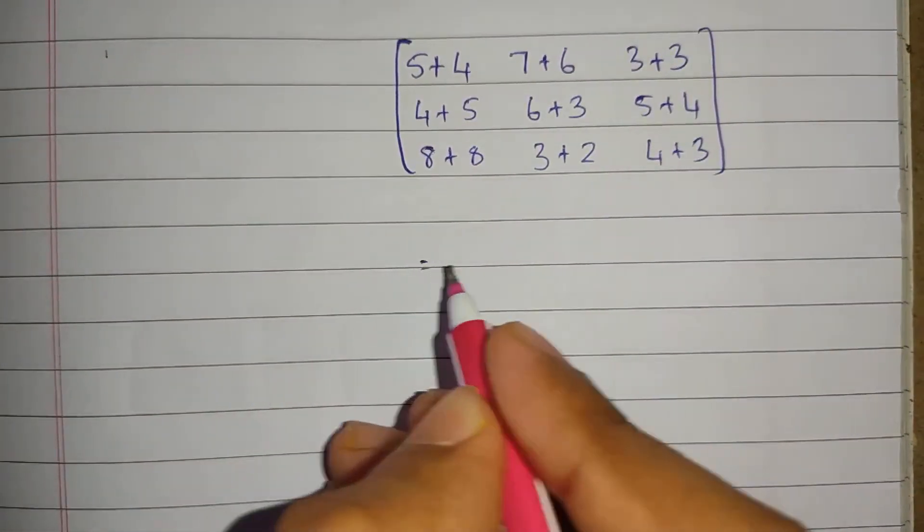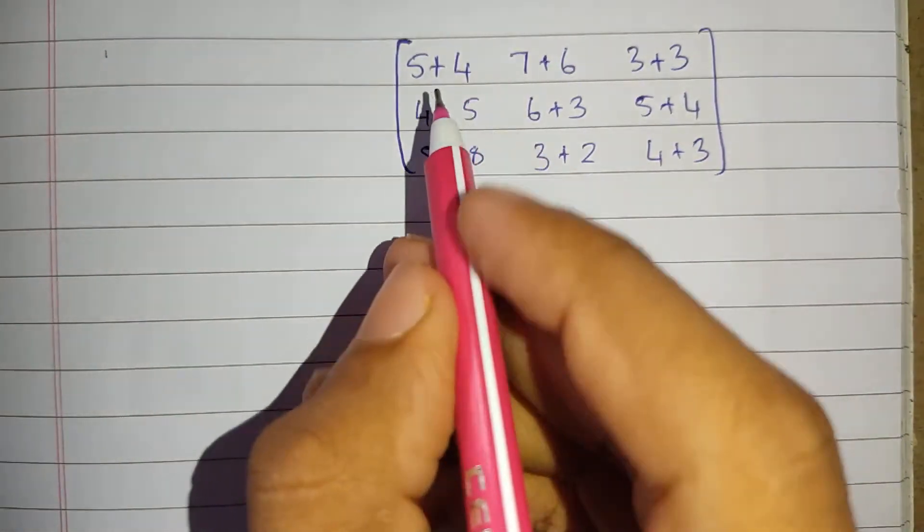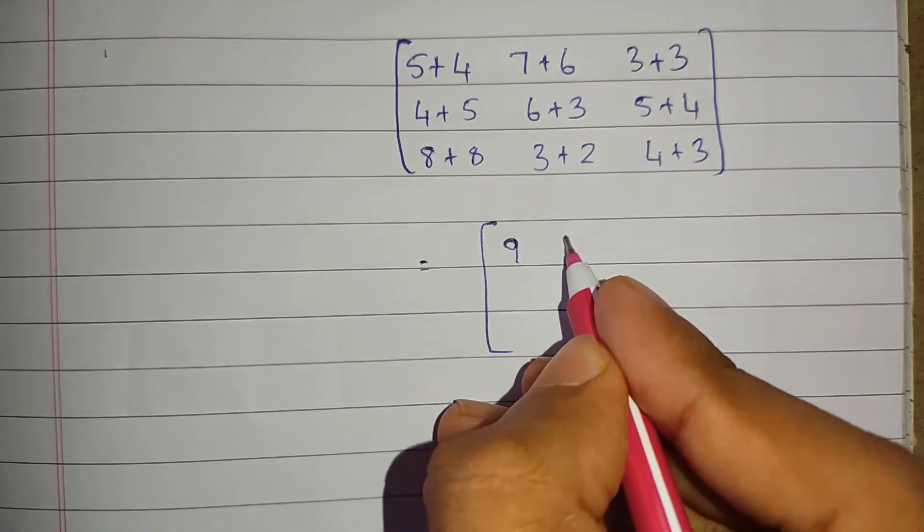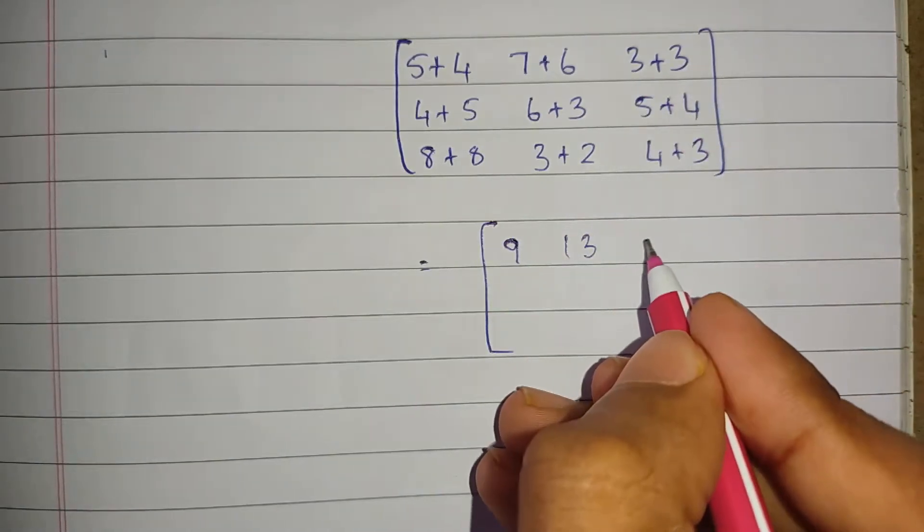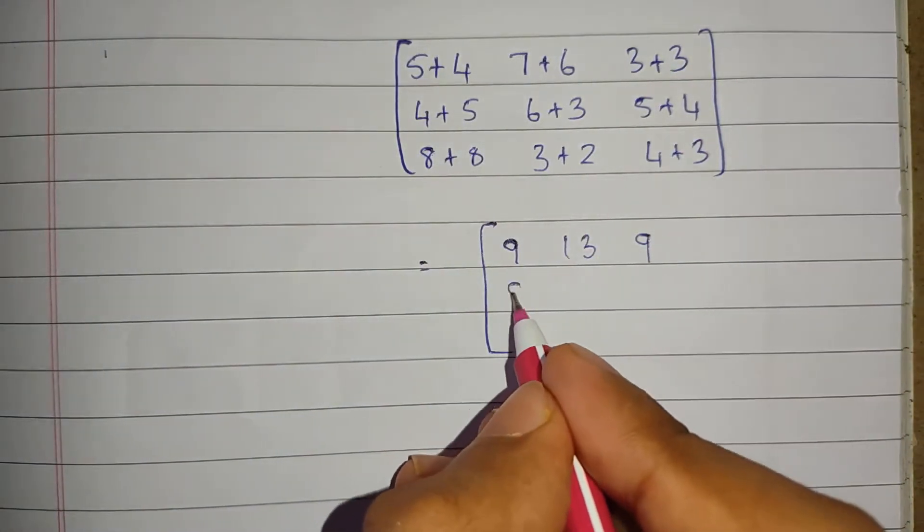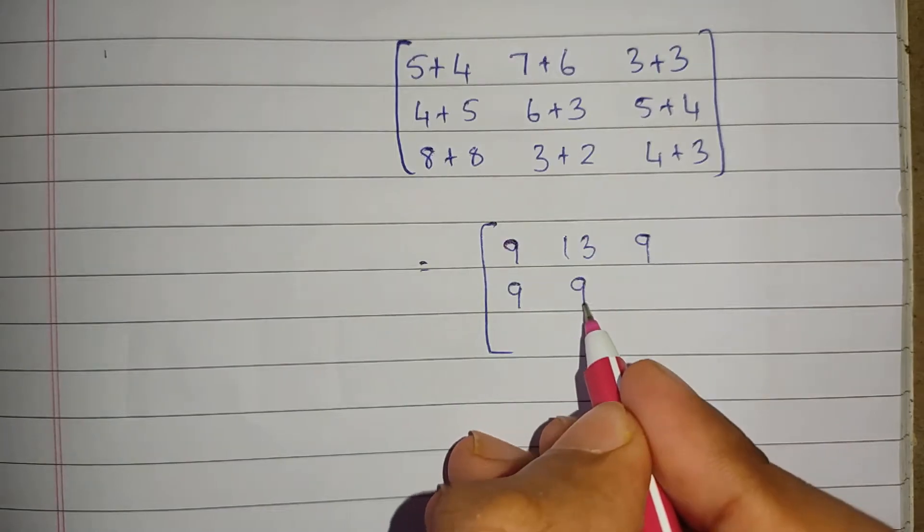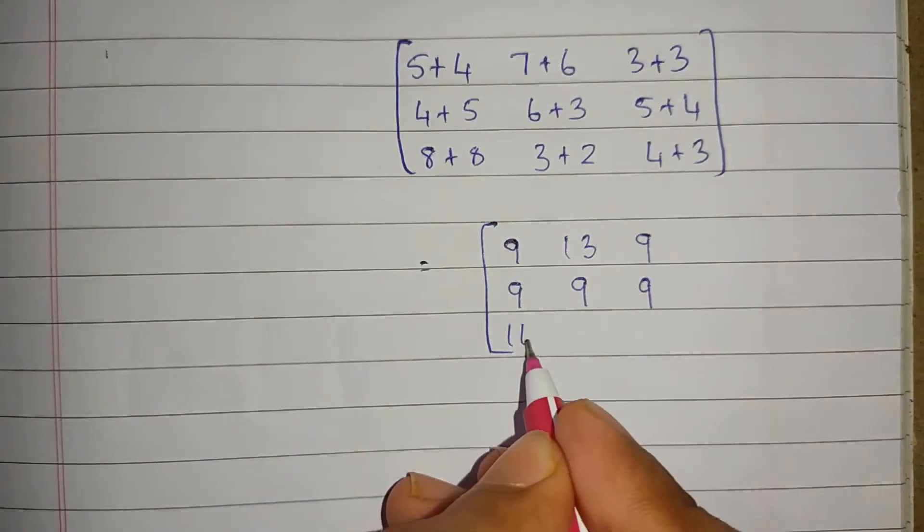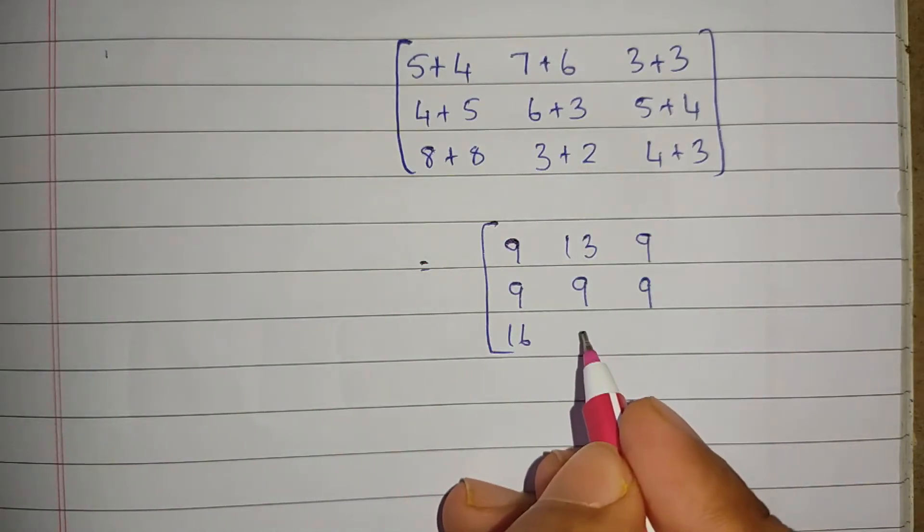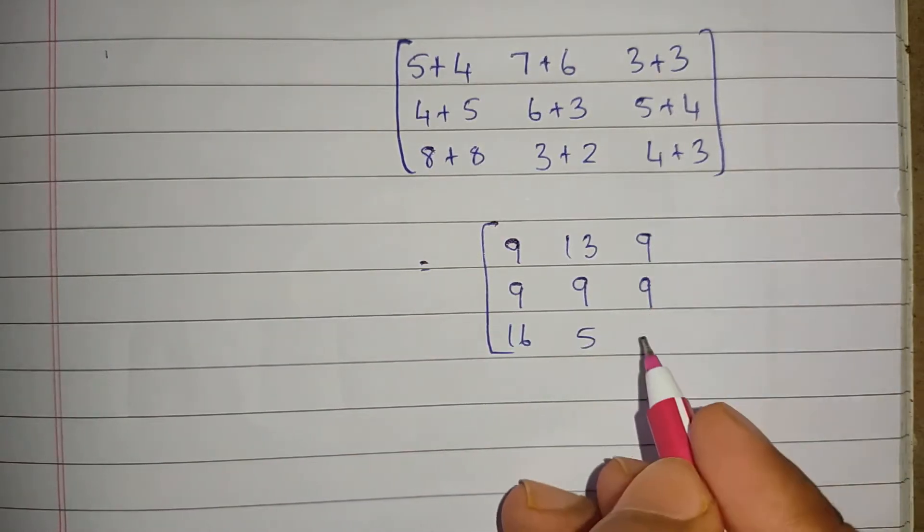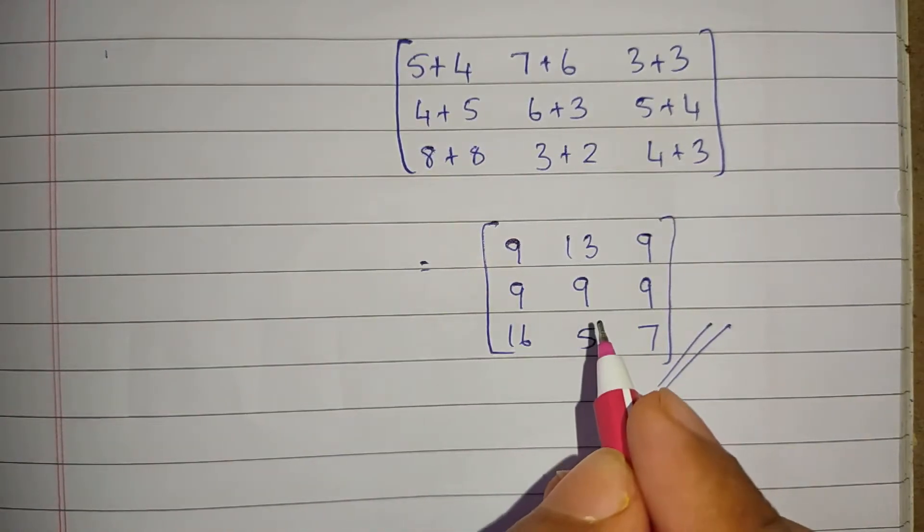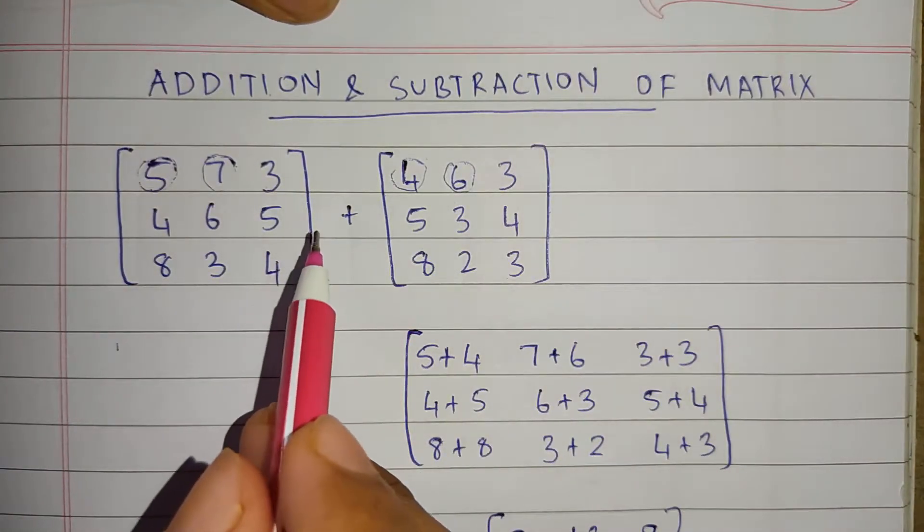Just add the elements: 5 plus 4 is 9, 7 plus 6 is 13, 3 plus 3 is 9, 4 plus 5 is 9, 6 plus 3 is 9, 5 plus 4 again is 9, 8 plus 8 is 16, 3 plus 2 is 5, 4 plus 3 is 7. So we got the addition of these two matrices.